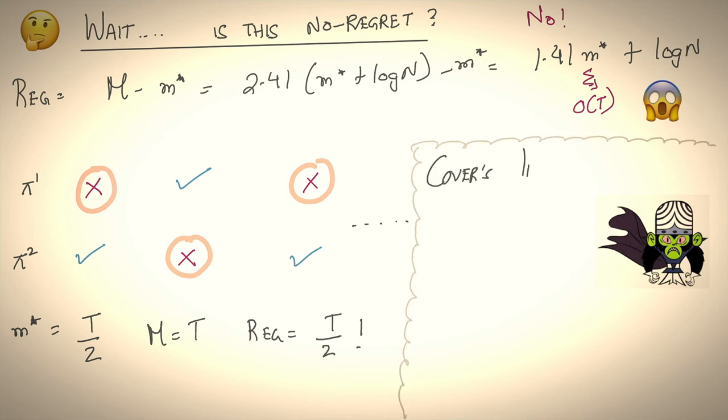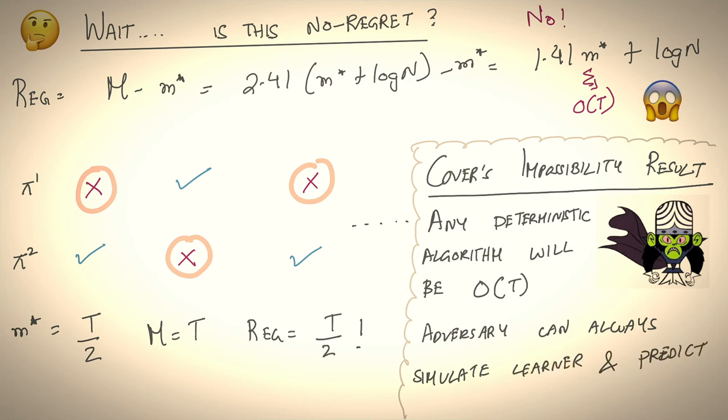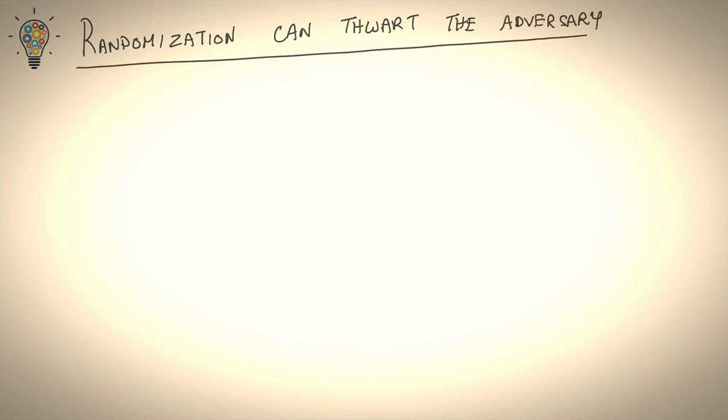It's nothing to do with weighted majority. Cover had a particularly important theorem called impossibility result that said any deterministic algorithm will be O(t), will not be no regret. And the proof is kind of simple to think about. The adversary can always simulate a deterministic learner and just predict the opposite. So this seems pretty hopeless. How do we get around this fundamental impossibility result? Easy. We rely on the power of randomness.